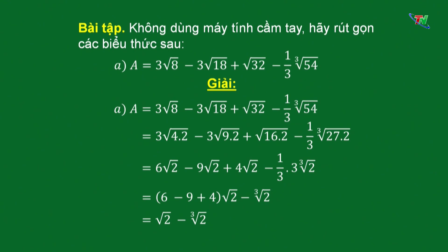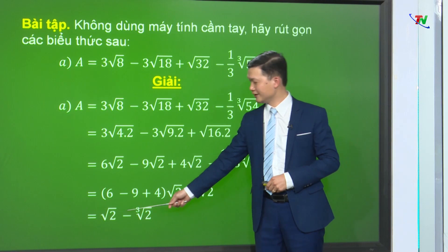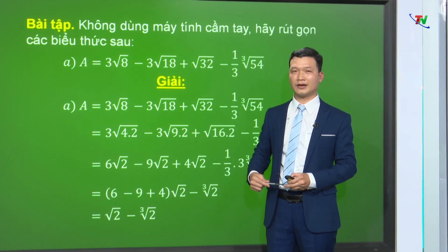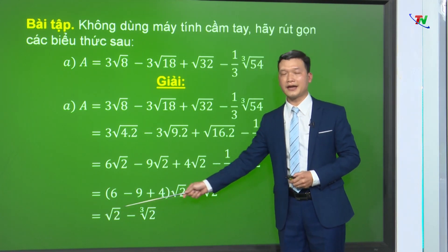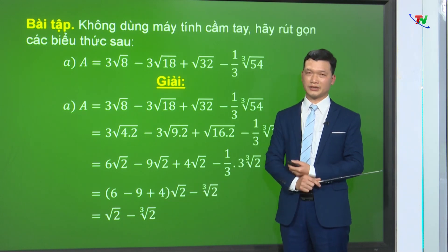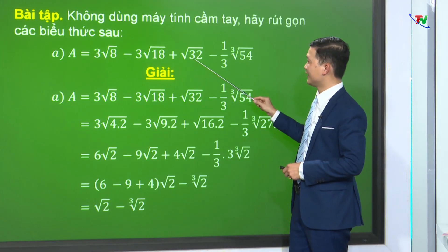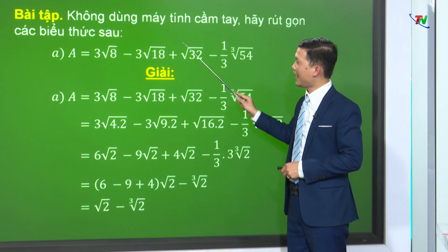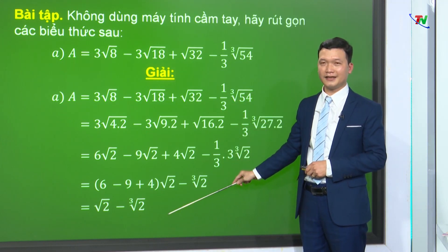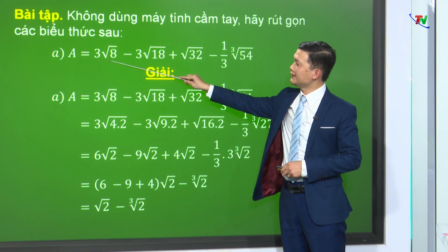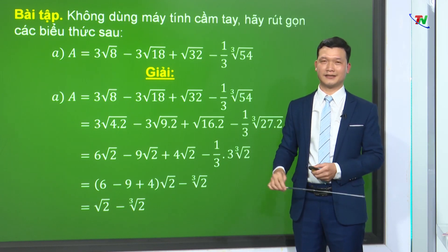Thầy lưu ý với các em: rất nhiều bạn có thể thấy 2 căn này khá giống nhau, trừ cho nhau và kết quả bằng 0 - đó là kết quả sai. Bởi vì đây là căn bậc 2 của 2 trừ đi căn bậc 3 của 2, 2 căn này bậc khác nhau nên không thể rút gọn được. Trong trường hợp ý A, các hạng tử chứa căn bậc 2 của các số thì thực hiện đơn giản như vậy. Nhưng nếu các hạng tử chứa căn bậc 2 mà bên trong là các biểu thức thì sẽ xử lý khác.